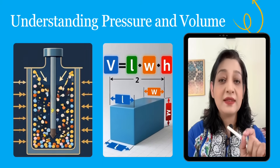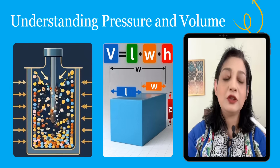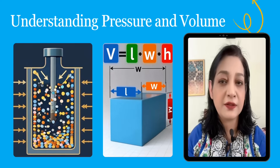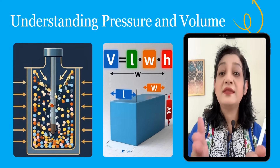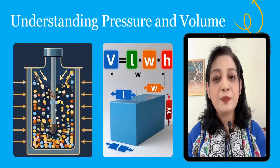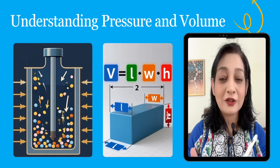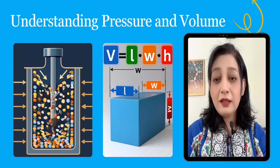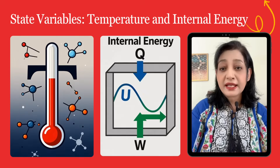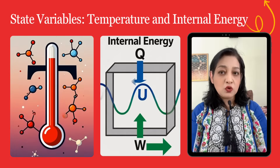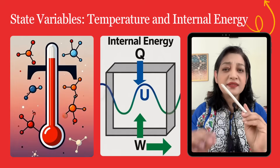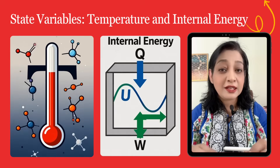Now I am defining state variables P, V, T, and U. Every system has certain measurable properties called state variables. Number one: pressure (P) — the force exerted by gas particles on container walls. Volume (V) — the space occupied by the system. Temperature (T) — measures the hotness and kinetic energy. Number two: internal energy (U) — the total energy of molecules inside the system. These values describe the condition or state of the system at any moment.